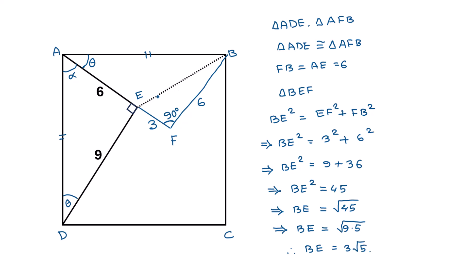So the distance of this dotted line will be 3√5. This is the solution to our given problem. If you like this video please subscribe to my channel. Thanks for watching.